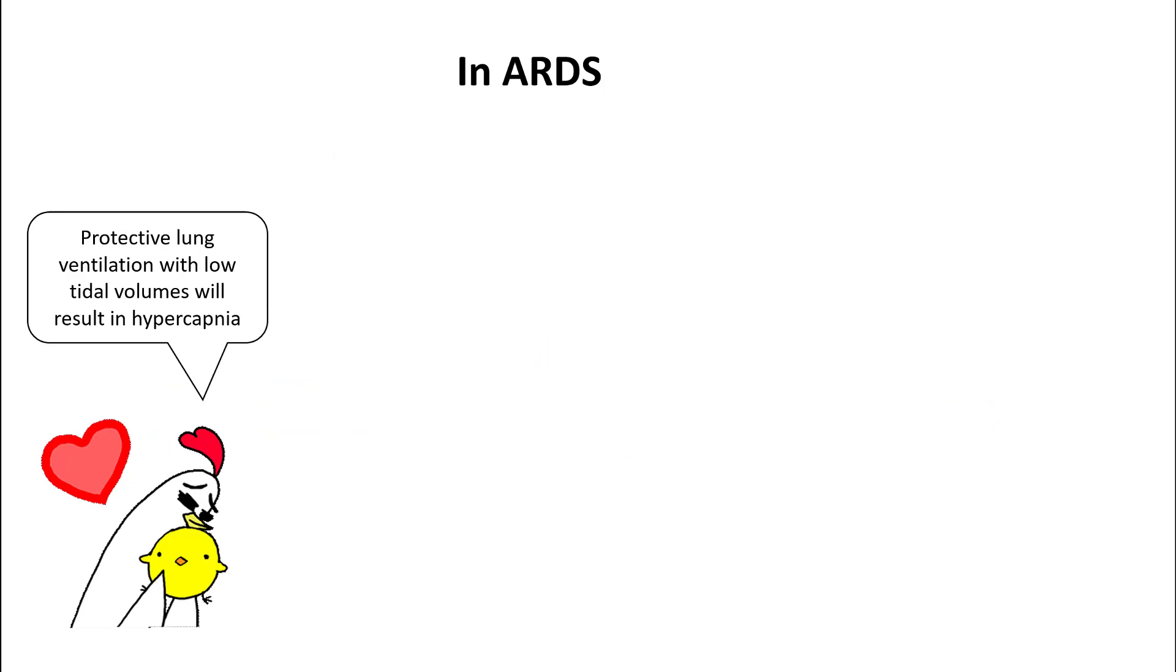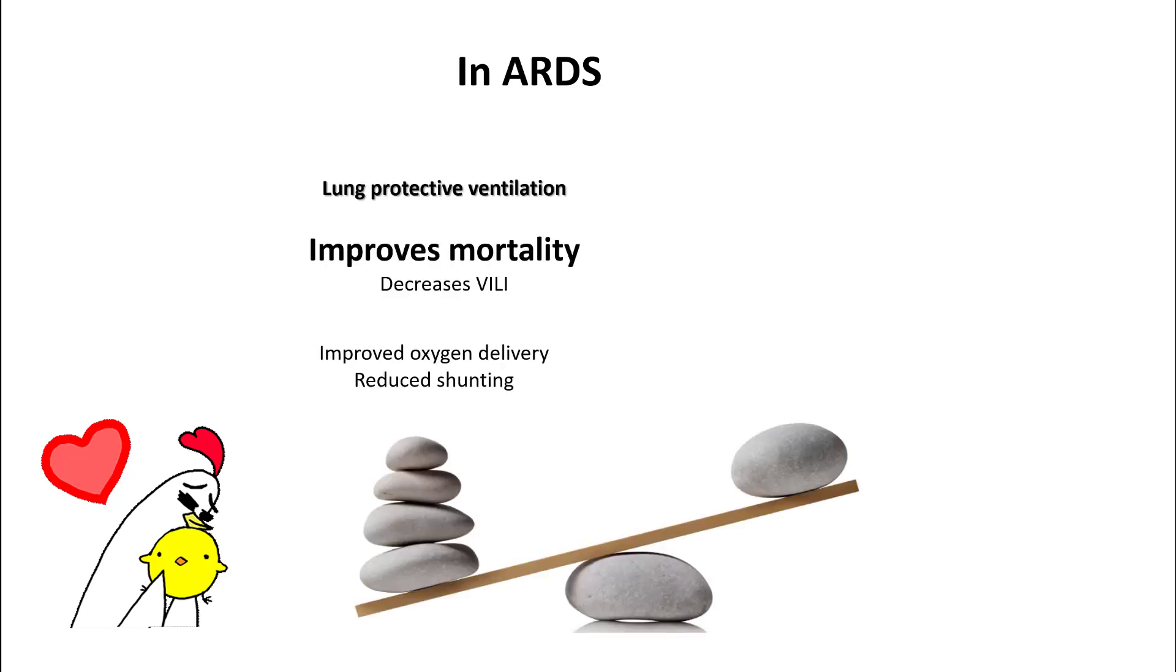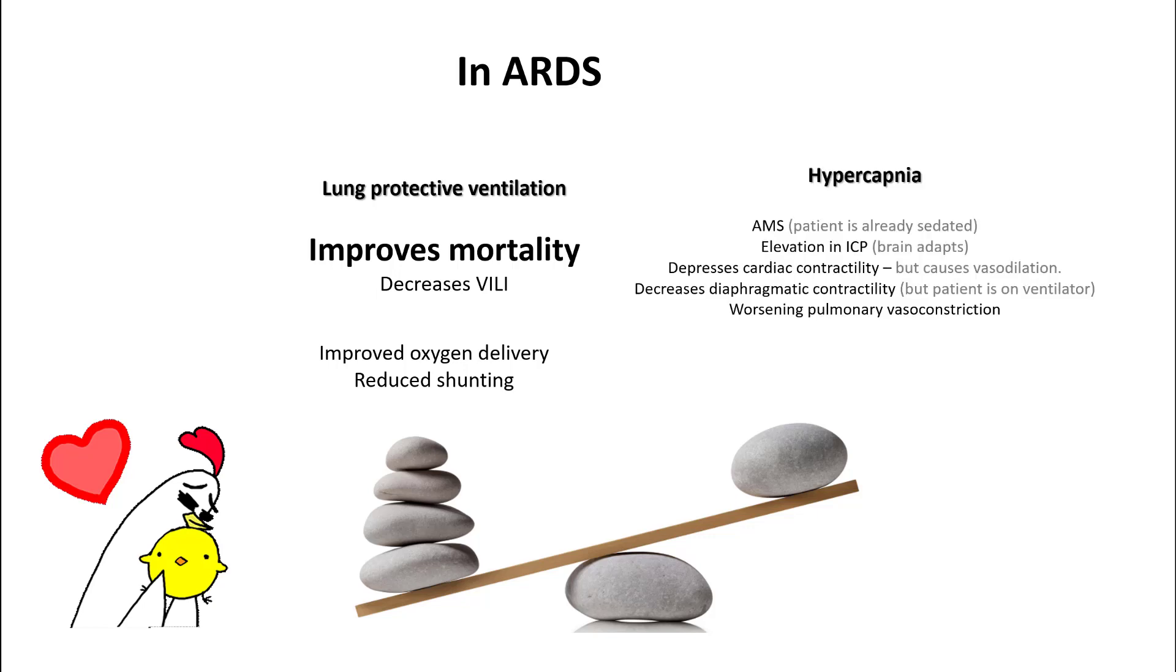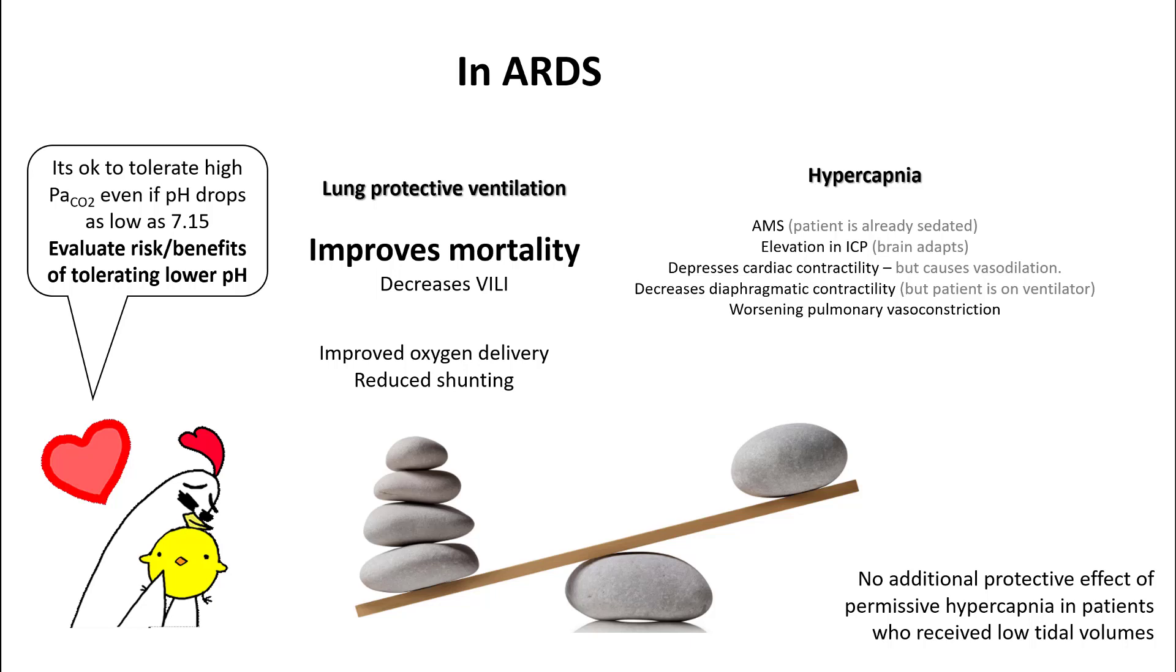In ARDS, protective lung ventilation with low tidal volumes will often result in hypercapnia. However, in ARDS, lung protective ventilation has been the only modality that has shown to improve mortality and also shown to decrease ventilator-induced lung injury. In comparison, though hypercapnia can result in the complications as we discussed before, advantages of lung protective ventilation with low tidal volume ventilation trump hypercapnia. It's absolutely okay to tolerate high PaCO2 even if pH drops as low as 7.15. Below 7.15, evaluate the risk and benefits of tolerating lower pH. The protective effect in lung protective ventilation is from low tidal volumes and not from hypercapnia.